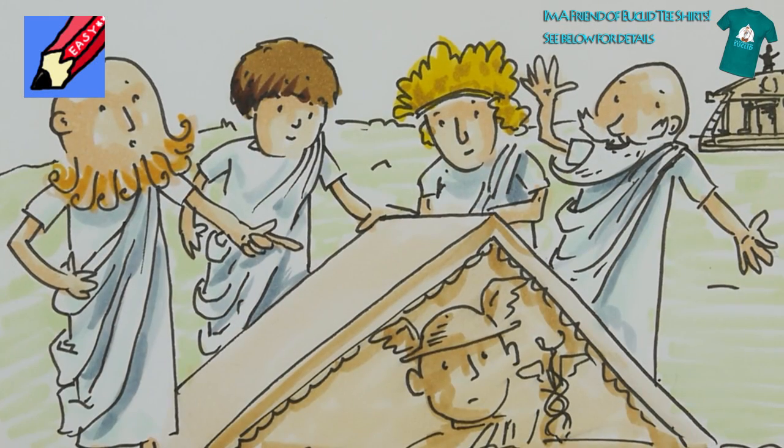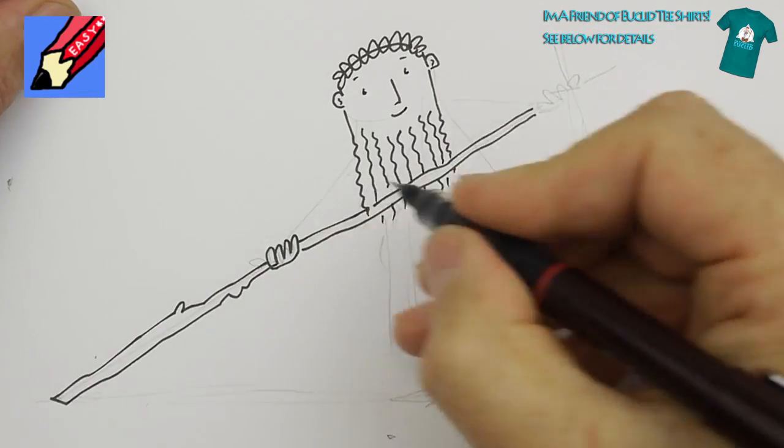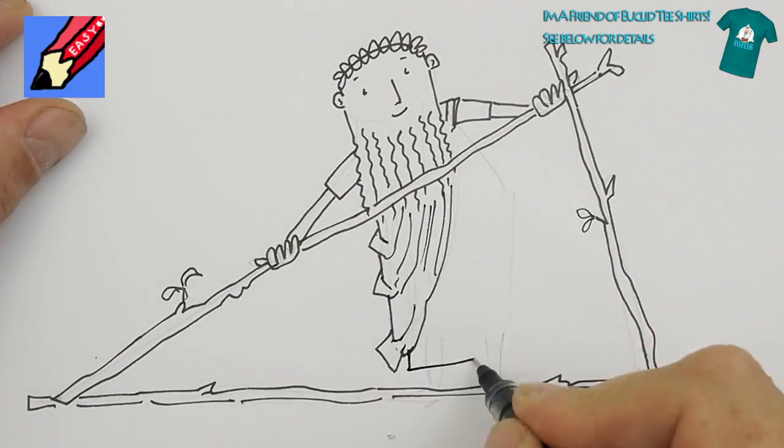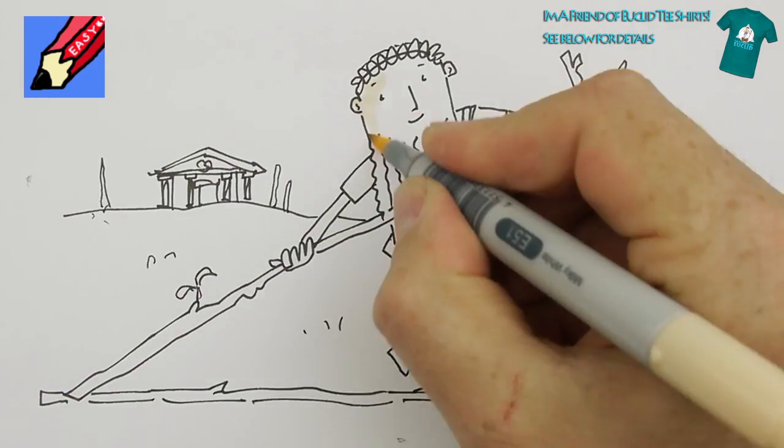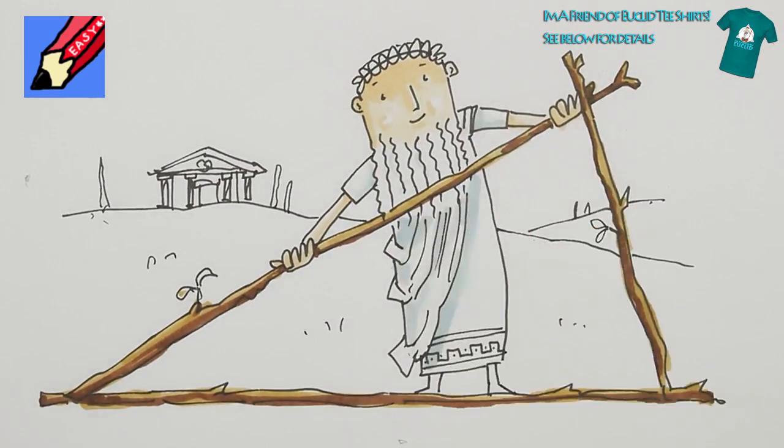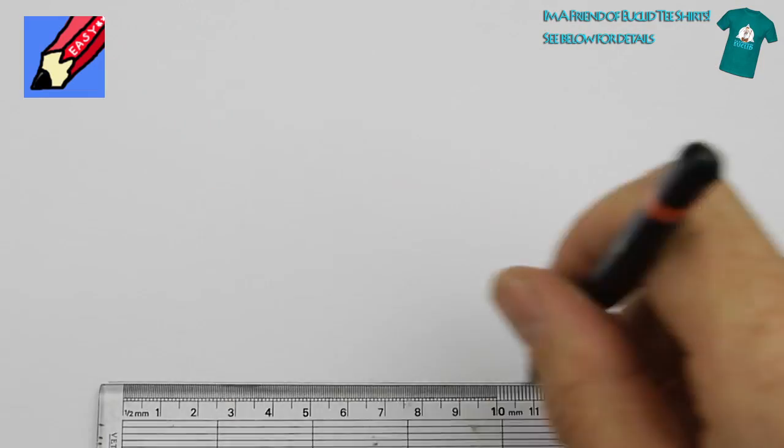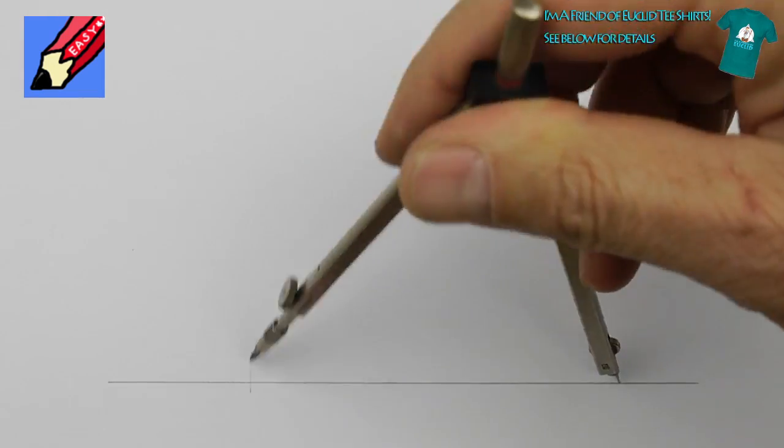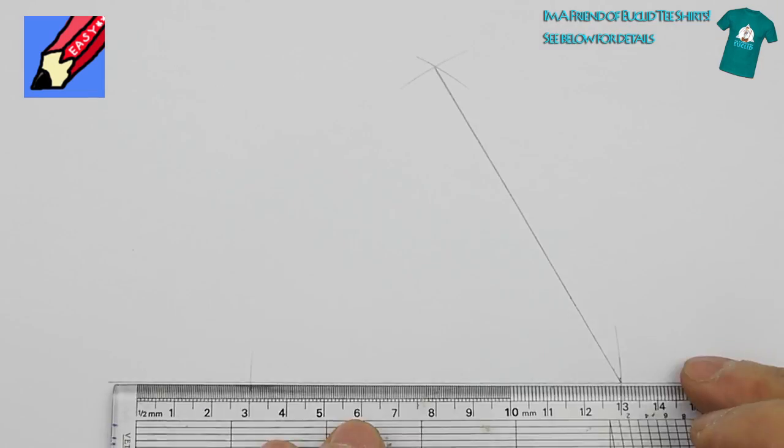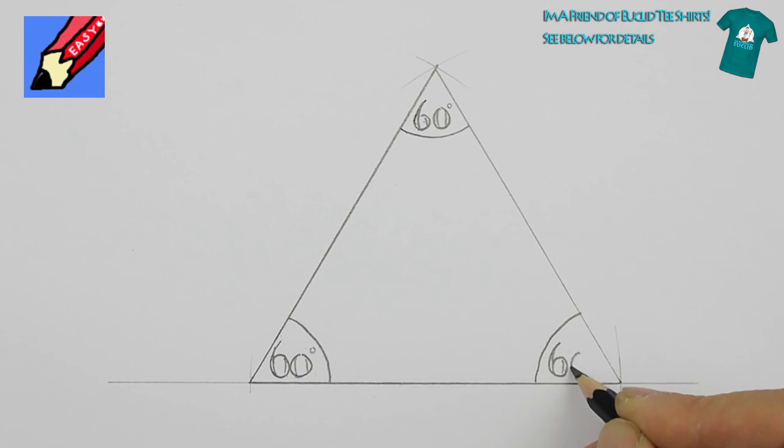We really love triangles, said Euclid's friends, but we can't help noticing that they don't all look the same. Well spotted, said Euclid. The shape of a triangle depends on the length of its lines and the size of its angles. The most simple triangle has everything equal. Its sides and angles are all the same. We call this shape an equilateral triangle.